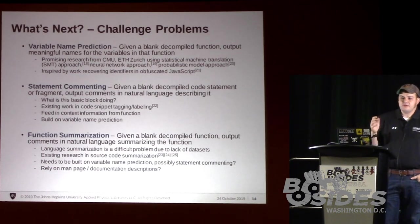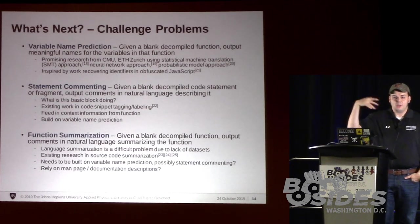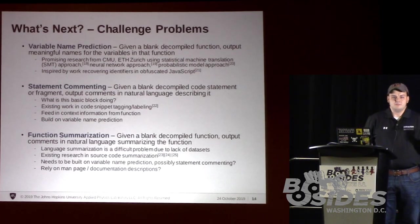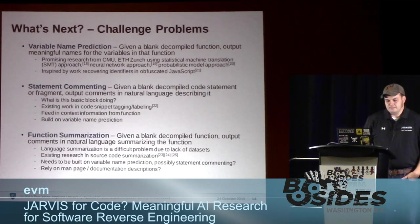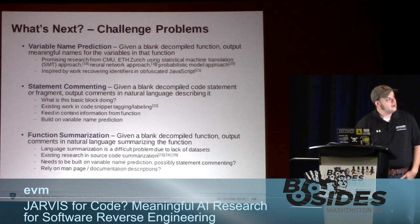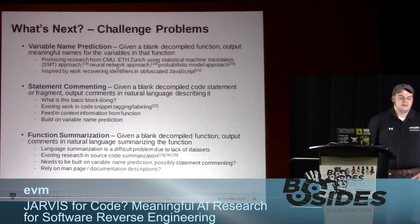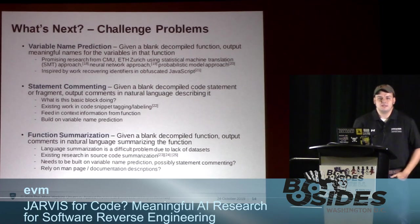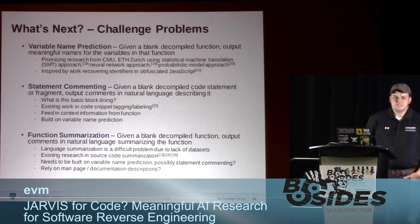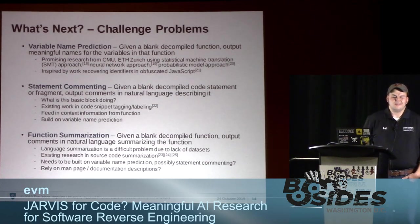First one is variable name prediction. When we decompile a function, we get a blank C function out. The idea is: given this blank decompiled function, predict the variable names within that function based on code you've seen before. This is actually one of the areas being actively worked on. CMU just came out with a new paper where they claimed about 74% of variable names within their dataset they were able to recover and predict. They're working on an IDA Pro plugin and planning to work on it for Ghidra.